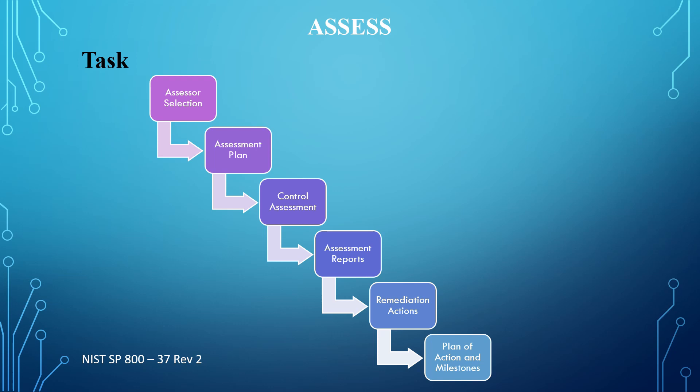The next task is the plan of action and milestone, which is the CA-5 control. It is used to document any identified findings or vulnerabilities and is used to track those vulnerabilities and findings to remediation. On this task, you prepare the plan of action and milestone based on the findings and recommendations of the assessment report.